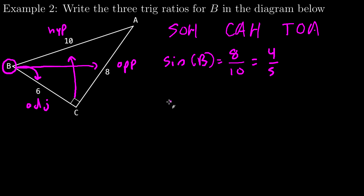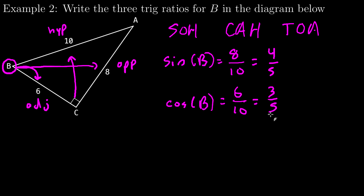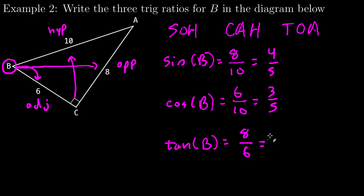Cosine of B — A for adjacent, the adjacent is 6; H for hypotenuse, the hypotenuse is 10. So 6 over 10 reduces to 3 fifths. Finally, TOA — tangent of B: O for opposite, opposite B is 8; A for adjacent, adjacent is 6. And 8 over 6 reduces to 4 over 3.